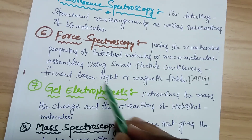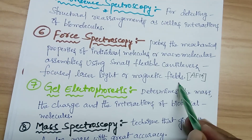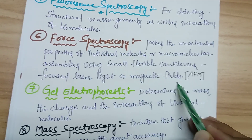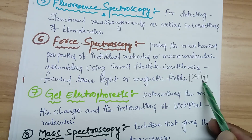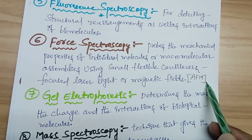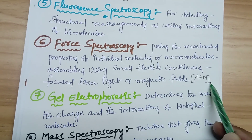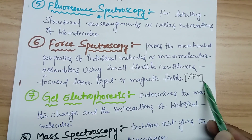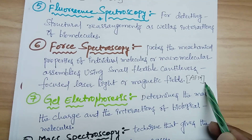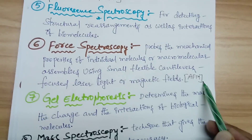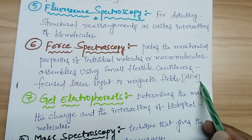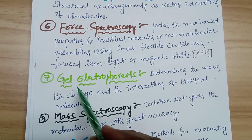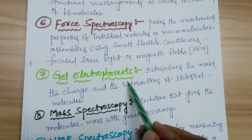The best example of force spectroscopy is AFM — Atomic Force Microscopy. Atomic Force Microscopy provides high-resolution spectroscopy, especially used for protein surface structure, topology, and morphology of samples. The seventh technique is gel electrophoresis.